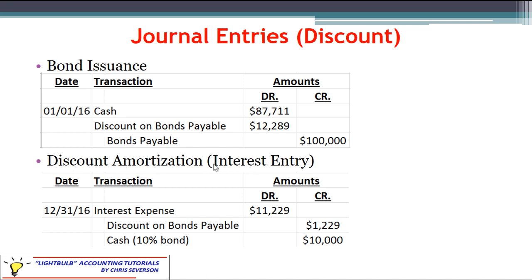Now for the interest expense entry, going to the credit to cash — it's still going to be that same $10,000 because it still has a 10% stated rate. To amortize the discount we have to credit it because it started off with a debit. It's still one-tenth of $12,289, so it's still $1,229 rounded, just on the credit side now.